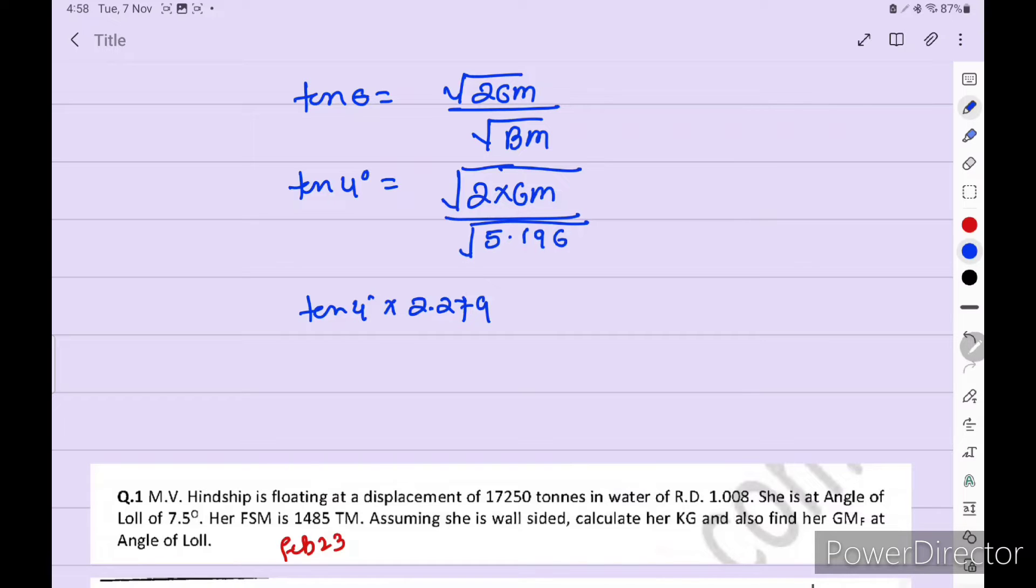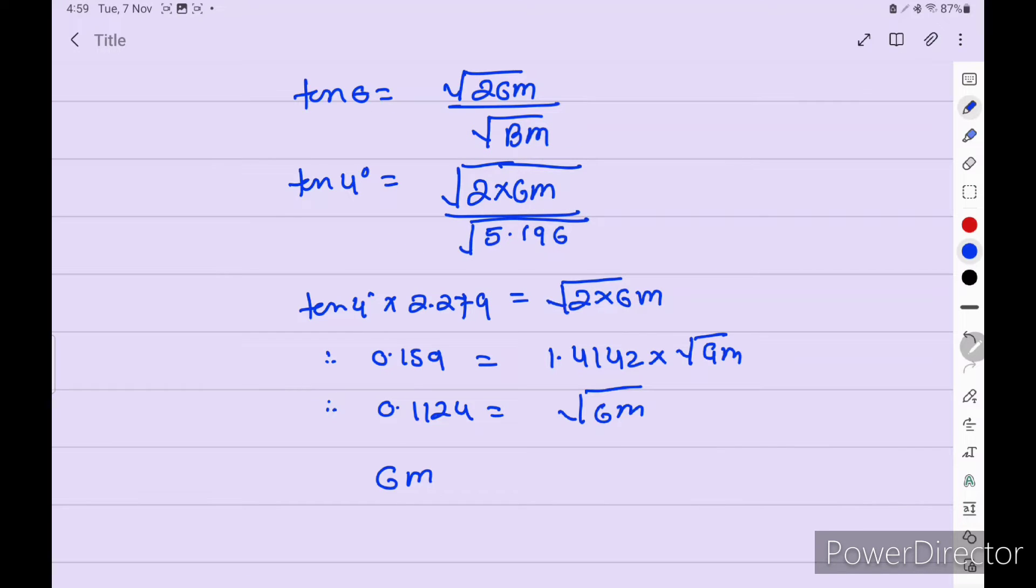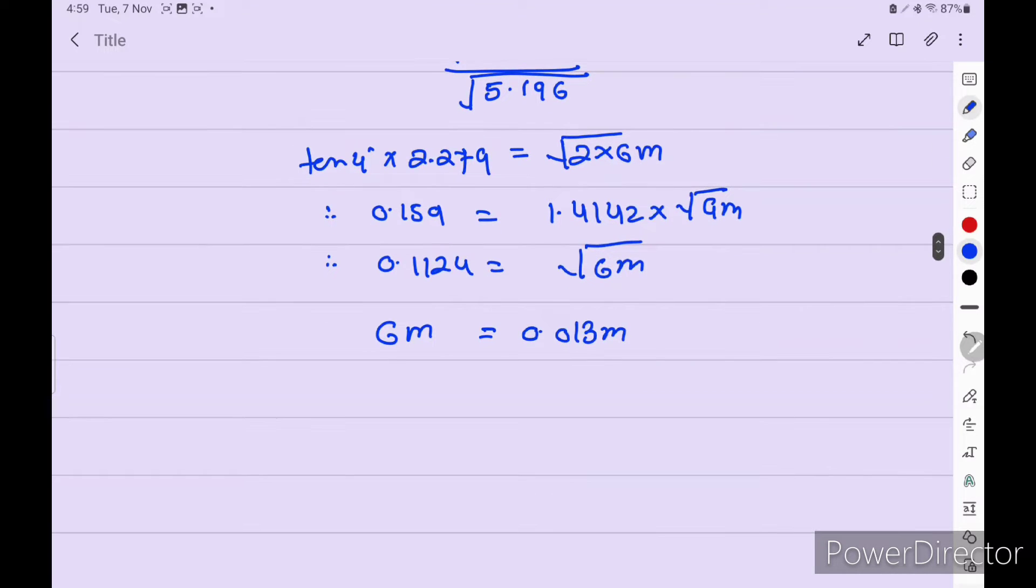So now we have to multiply. So tan 4 degree is equal to 2.279. We have to remove this square root. So we get the 2.279 is equal to square root 2 into GM. So 0.159 is equal to 1.4142 into square root GM.